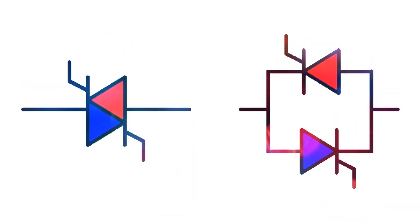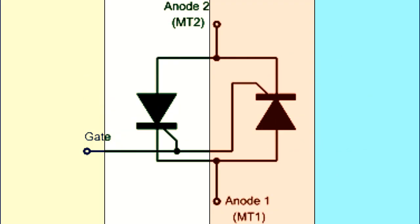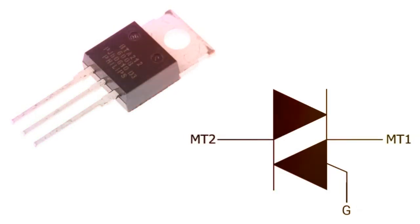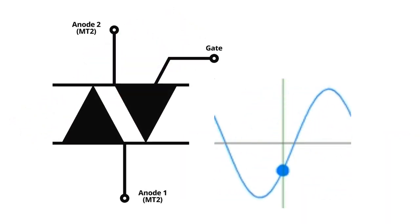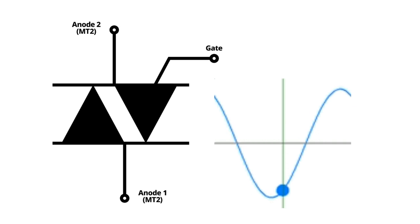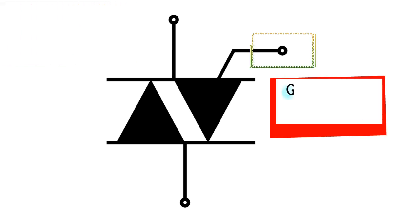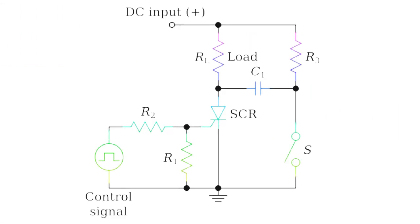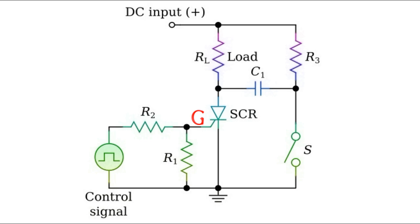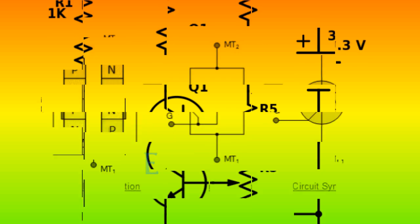A triac works exactly like two conventional thyristors connected in reverse parallel back to back, and because of this structure the two thyristors share a common gate base. Therefore a triac is a three-terminal device. Since the triac passes the sine wave in both directions, instead of naming the anode and cathode, we use MT1 for main terminal 1, MT2 for main terminal 2, and G for the gate terminal. In many AC switching applications, the gate terminal is connected to MT1 in a way similar to the gate-cathode relationship of a thyristor or the base-emitter relationship of a transistor.